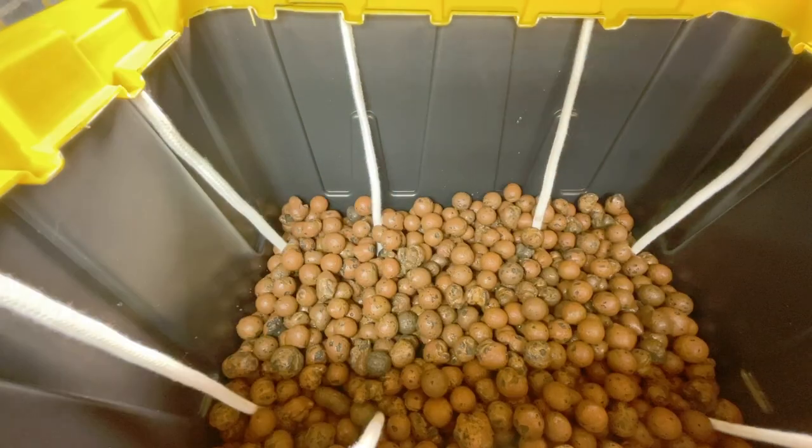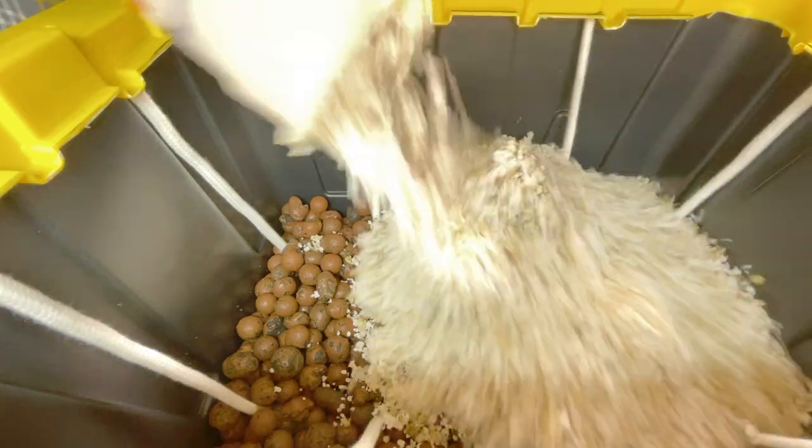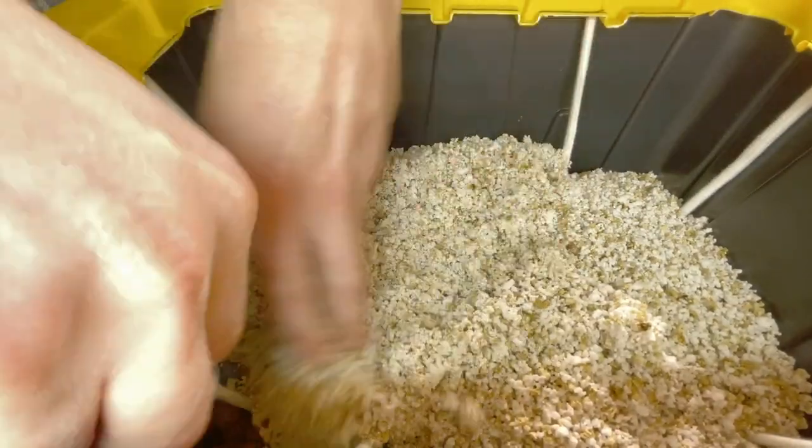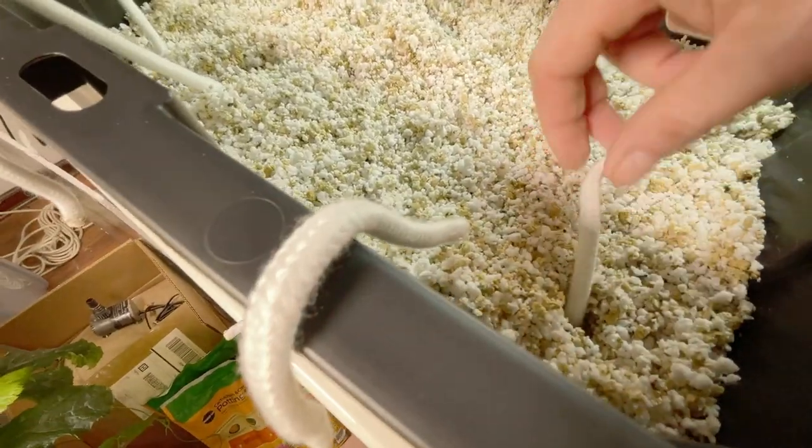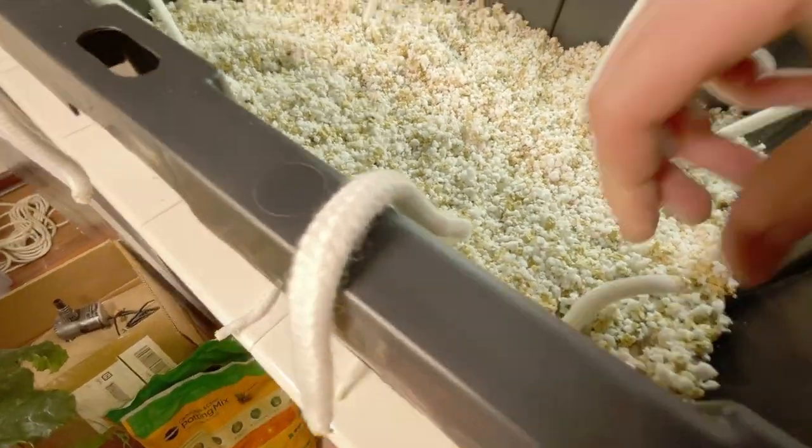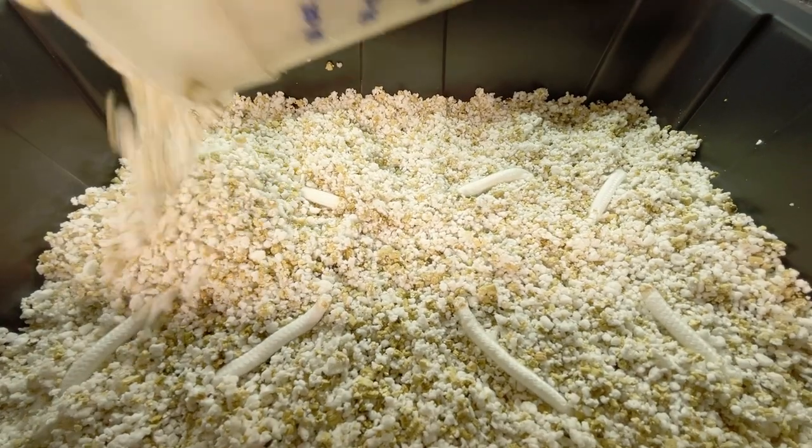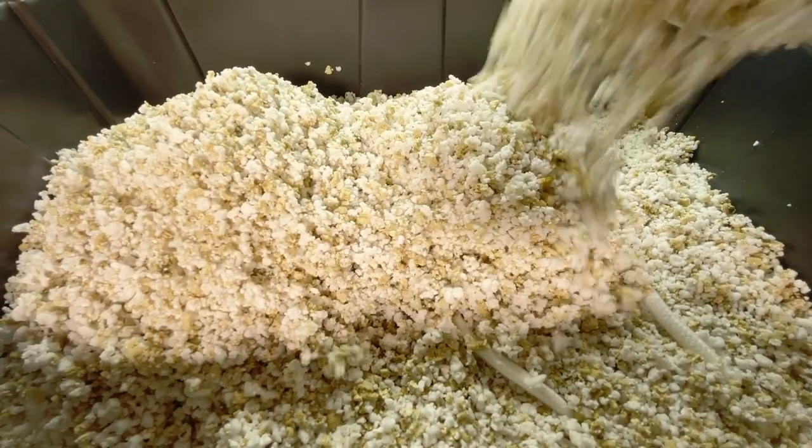Then I'm going to start putting in the perlite vermiculite mix and as I add that mix I'll try and move these wicks around so that they stay in position as I fill the tote up. To keep the top of the media dry I'm going to bury the wicks two to three inches below the surface and that should help prevent things like algae growth.